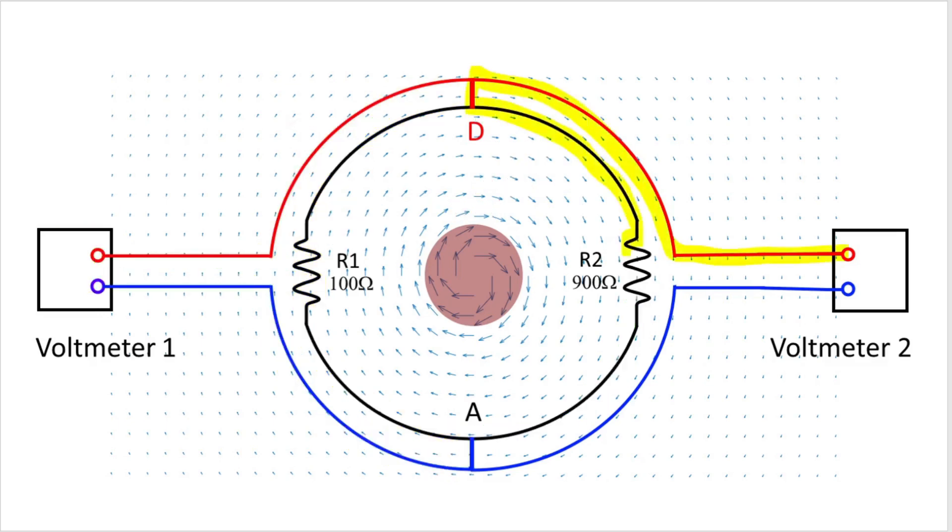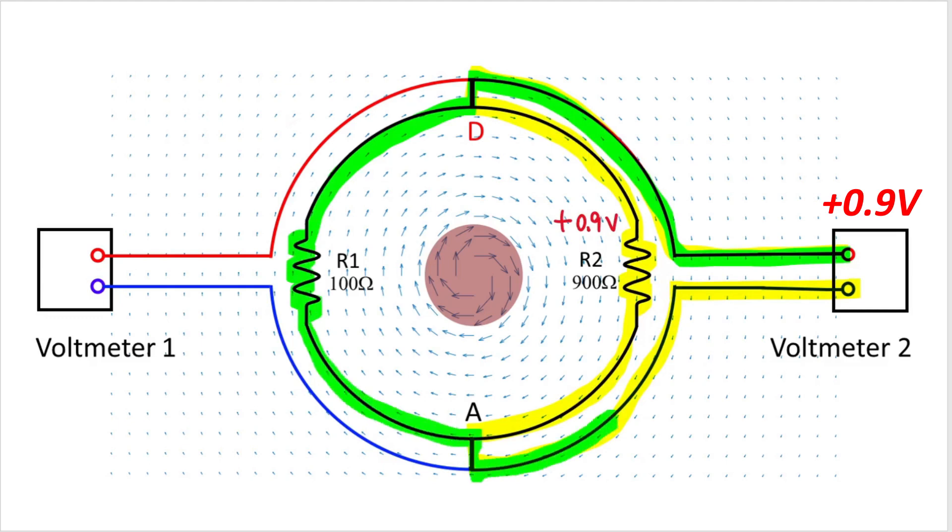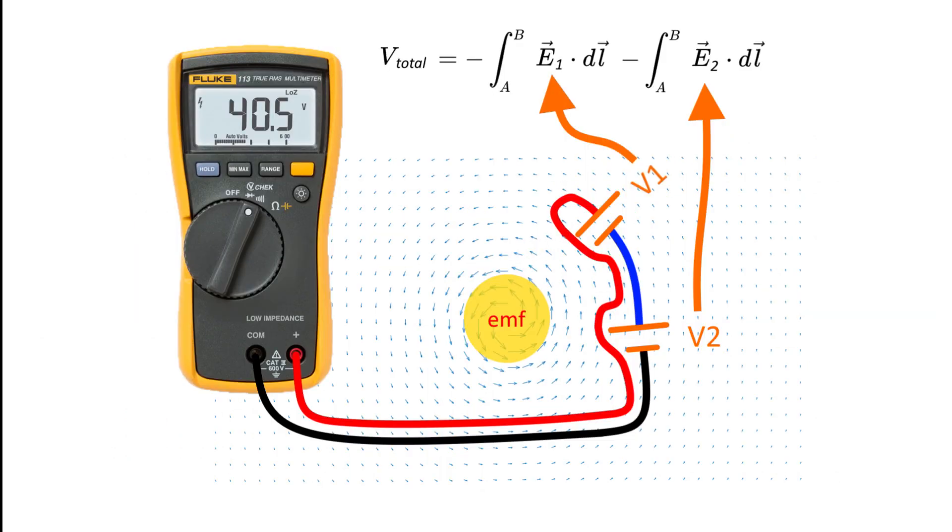Likewise, meter 2 measures directly from R2, and gives a reading of 0.9 volt. At the same time, it also measures minus 0.1 volt from R1, plus the induced EMF in the loop, which is 1 volt, and the net reading is also 0.9 volt. So to eliminate or minimize the side effect of dV/dt in the measuring loop, we should route the probing wires along the path where the voltage we intend to measure is located.